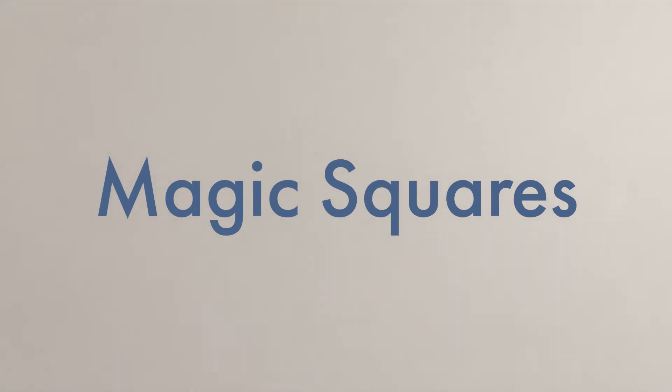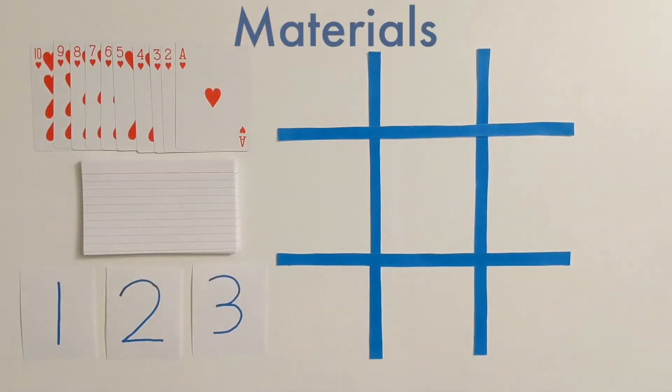This video is going to cover a combinatorial problem about placing numbers into a grid known as a magic square. Materials you'll need will just be numbers. You can write them on scraps of paper or index cards, or if you have them around the house, playing cards work great.